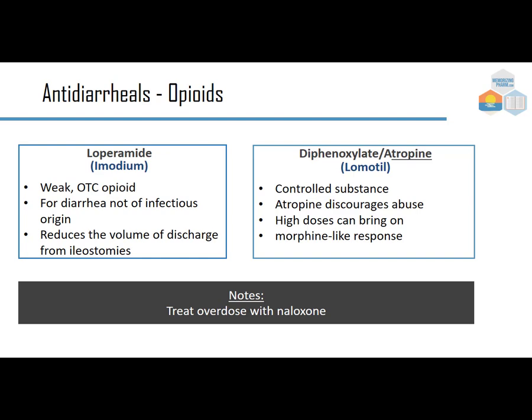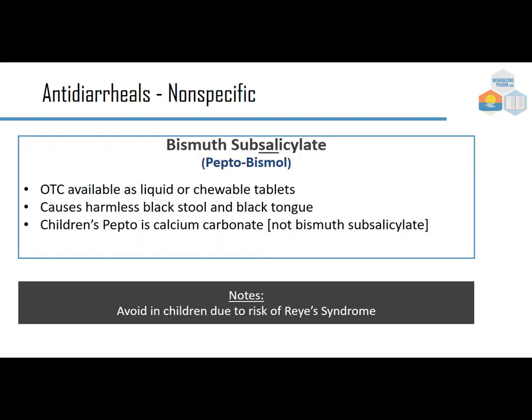Loperamide (Imodium) is a weak over-the-counter opioid used for non-infectious diarrhea and to reduce ileostomy discharge. Diphenoxylate with atropine (Lomotil) is a step up — it's a controlled substance, and the atropine discourages abuse since high doses cause a morphine-like response. In overdose, treat with naloxone.